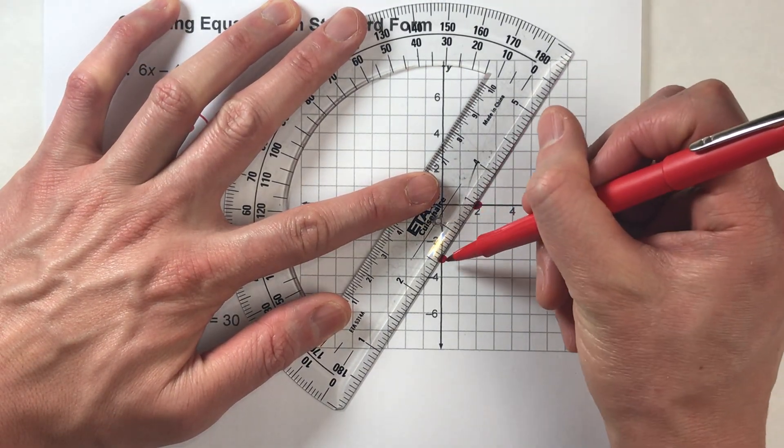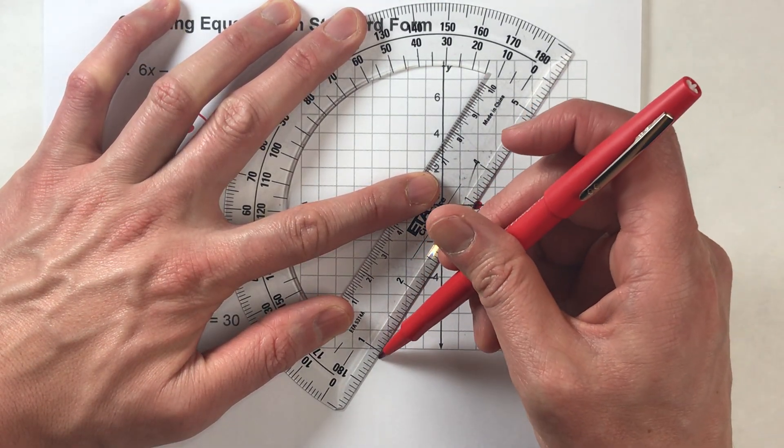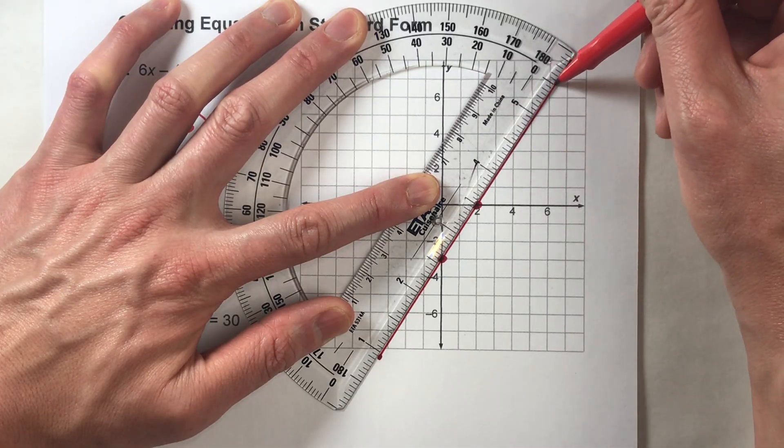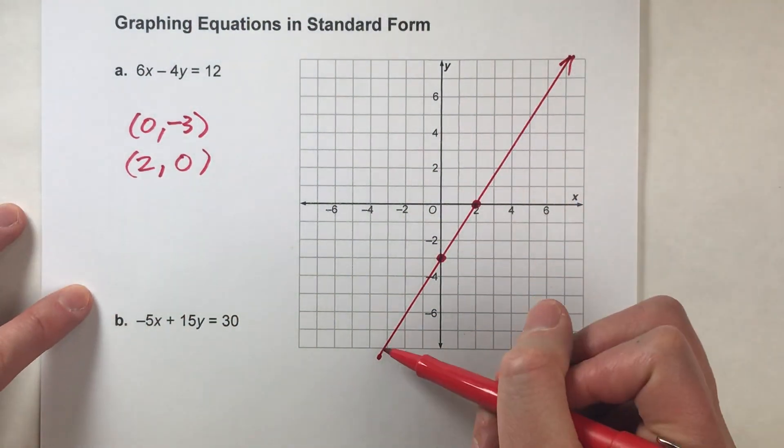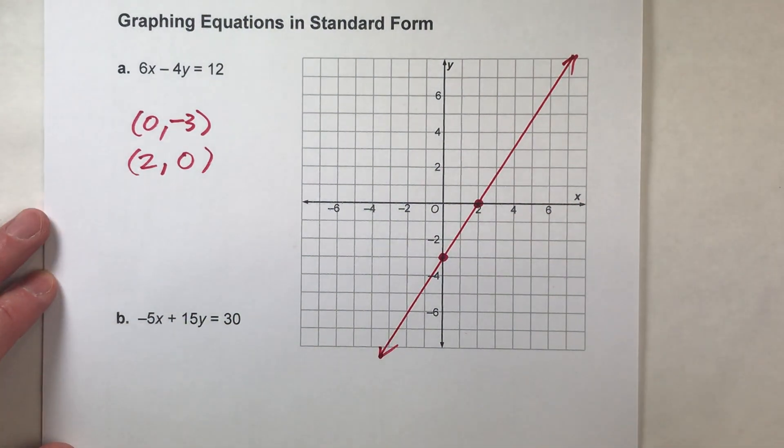And now I have enough information to draw the line for my equation. Just make sure that the line goes through these two points. And you're going to have to graph carefully because anytime you're basing your line on just two points, it's really easy to mess up the rest of the line. But that's pretty good. There it is right there.